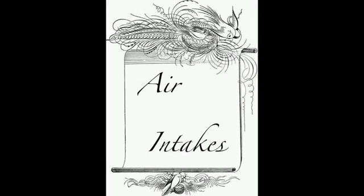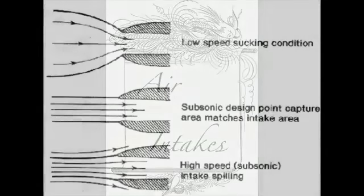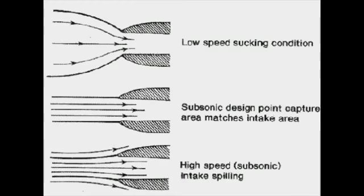The air intake can be designed to be part of the fuselage of the aircraft. Its function is to suck air from the atmosphere. There are basically two types: subsonic inlet and supersonic inlet.